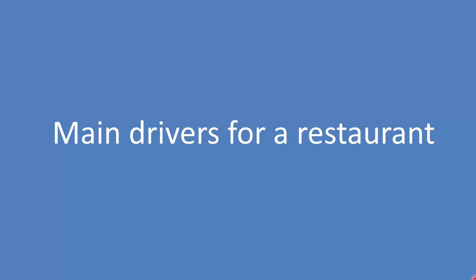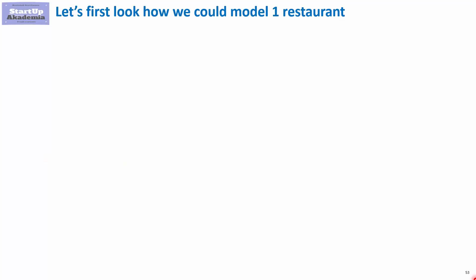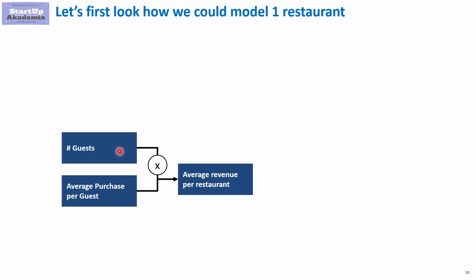Let's have a look at the main drivers for a restaurant chain. We start with an average single restaurant, looking at the number of guests that such a restaurant would have on average, and also how much an average guest would purchase — how much they would spend in the restaurant. This gives us the average revenue per restaurant.